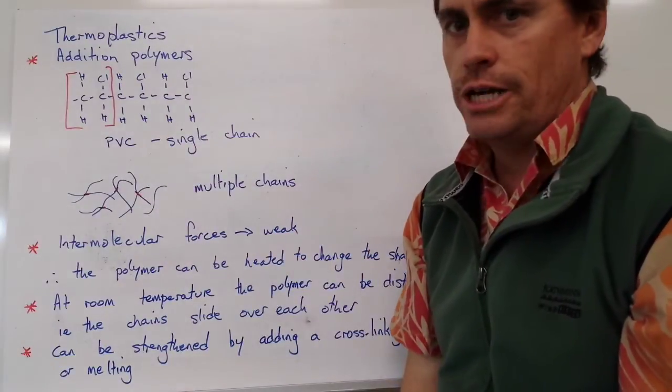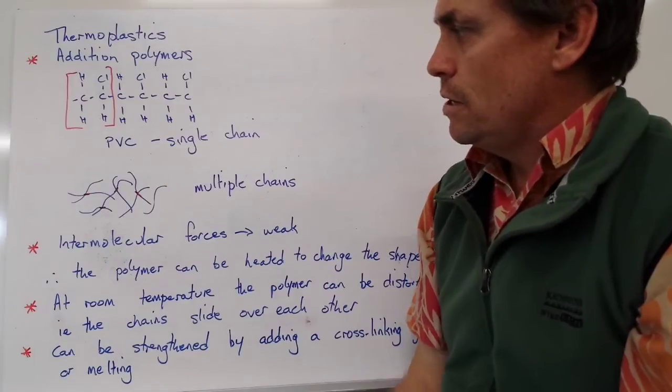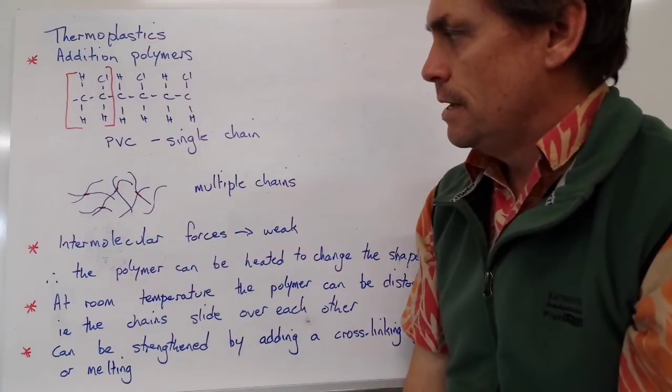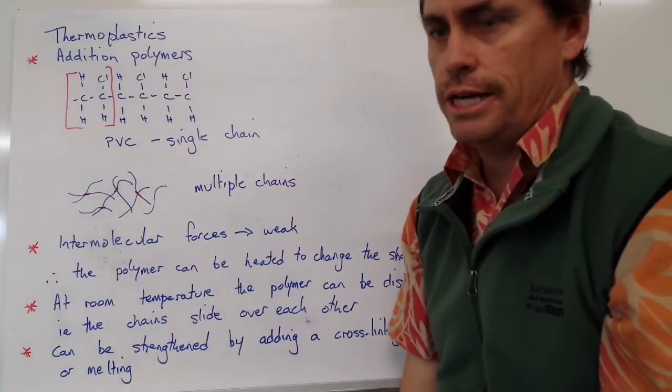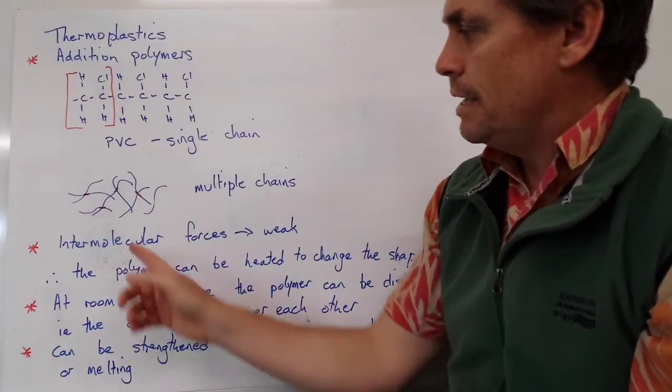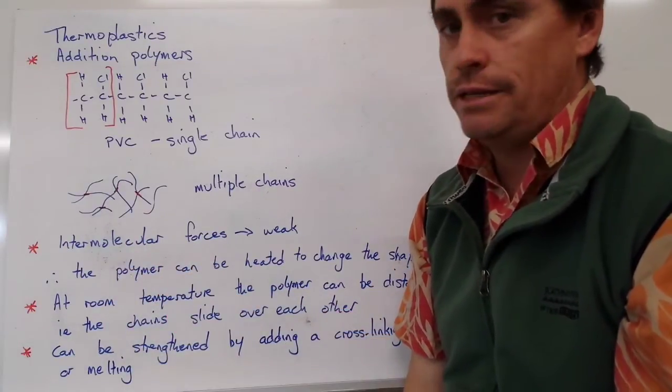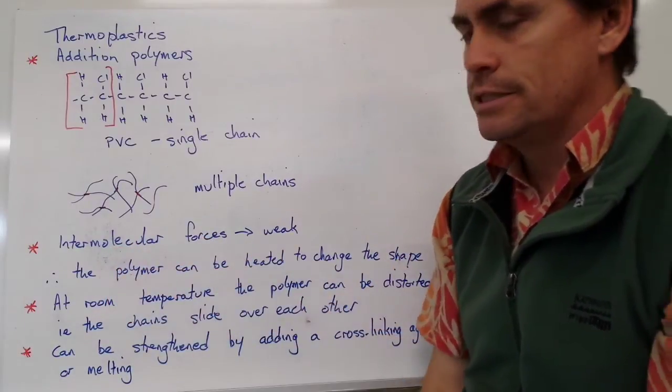If we put multiple chains together, we get the diagram below, which is a loose web type structure made up of multiple chains. You'll notice that I have very little interaction between those chains. There's very little intermolecular force of attraction between those molecules. Therefore, we say that the intermolecular forces are weak.